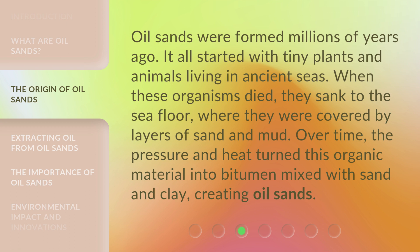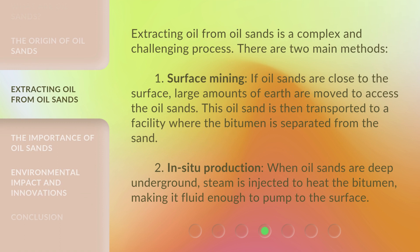Extracting oil from oil sands is a complex and challenging process. There are two main methods. One: surface mining — if oil sands are close to the surface, large amounts of earth are moved to access them, and the oil sand is then transported to a facility where the bitumen is separated from the sand. Two: in situ production — when oil sands are deep underground, steam is injected to heat the bitumen, making it fluid enough to pump to the surface.